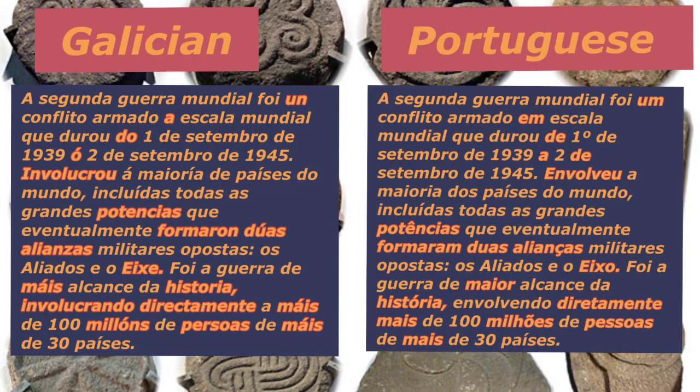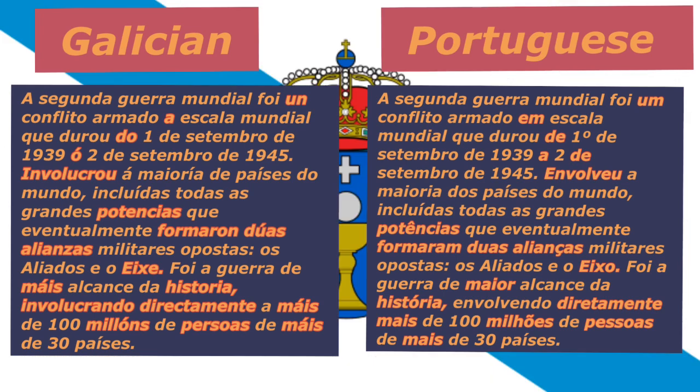Here is a sample text comparing the two languages. The main differences are that some words are different, as well as some prepositions — for example, a and o. Involucro in Galician versus envolver in Portuguese. The verb form is also a little bit different: formaron in Galician versus formaram in Portuguese. And Galician uses persoas where Portuguese uses pessoas, and millóns versus milhões. For the most part, these languages are very close to each other, but they are still treated as different languages.